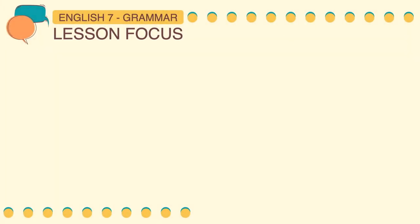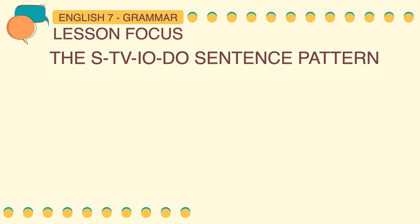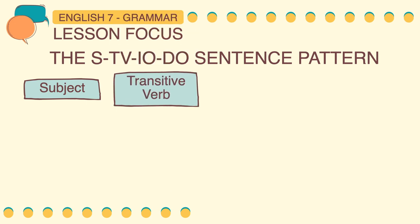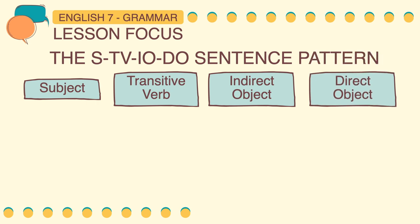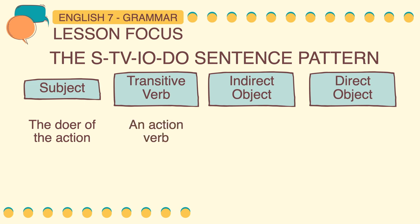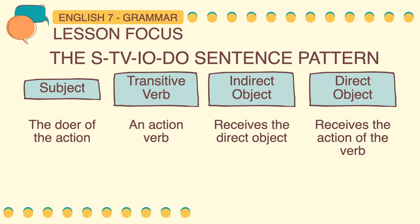Our knowledge on the STVDO sentence pattern is very important for us to better understand our lesson focus for this class. A subject is the doer of the action in a sentence — it can be a noun, pronoun, or group of words that acts as a noun. A transitive verb is an action verb that has an object to receive that action; it takes one or more objects to complete its thought. An indirect object is the indirect receiver of the action, or it receives the direct object, and answers the question for whom or to whom the action is done. A direct object is the receiver of the action — a noun or noun phrase that answers the questions whom and what.